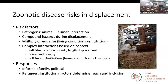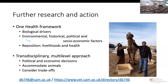During displacement, livestock is an important consideration in determining movement and destination location, however rarely accommodated by relief agencies. Pre-existing connections, status within the community, the role within the household, and available resources played a significant role in determining displacement experience and related impact on immunity and health. Pathways to zoonotic diseases are therefore complex and non-linear, and responses to disease risks need not only consider biological drivers, but importantly environmental, historical, political, and socioeconomic factors.